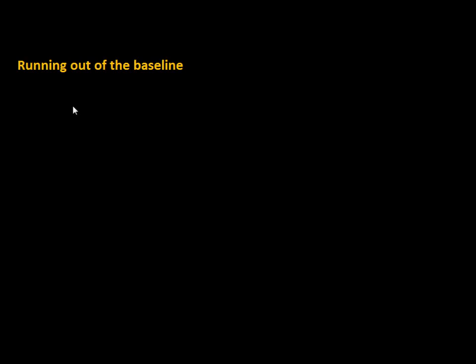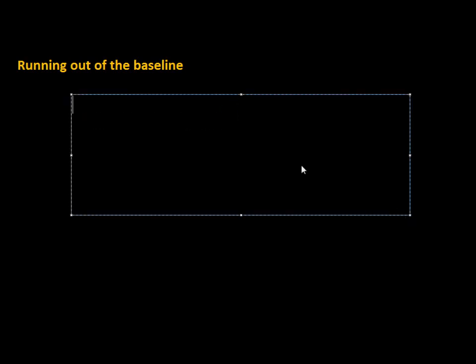Let's take a look at the exact wording of the rule. The runner is out when he runs more than three feet away from his baseline to avoid being tagged.